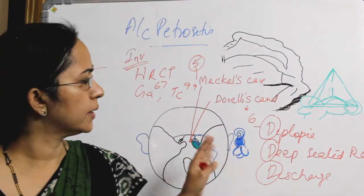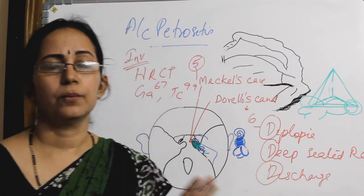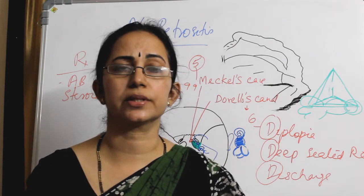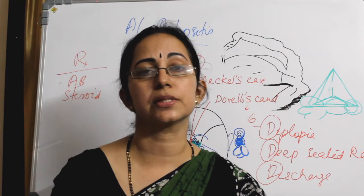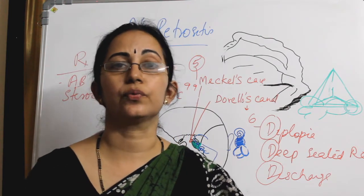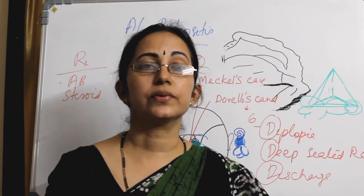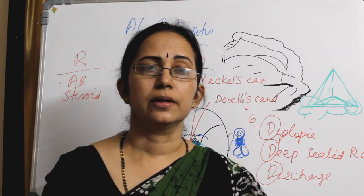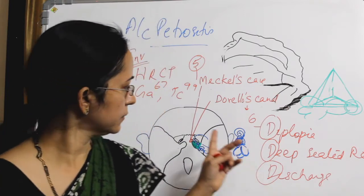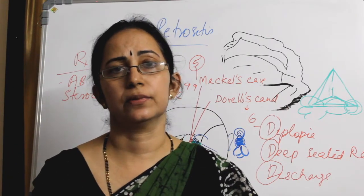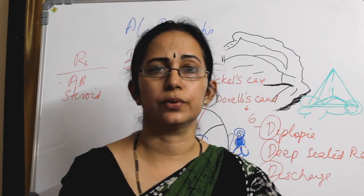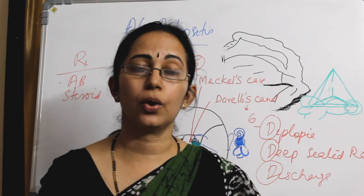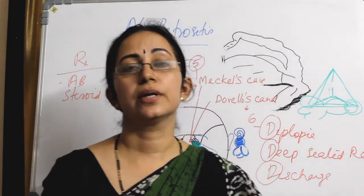If the condition is not responding or is worsening, you have to go for surgical drainage. Mostly, a mastoid exploration — either a cortical mastoidectomy with skeletonization of the semicircular canals, or a modified radical mastoidectomy — will suffice. If there is still a collection of pus, you have to explore the petrous apex.